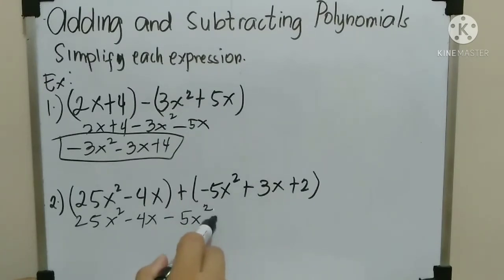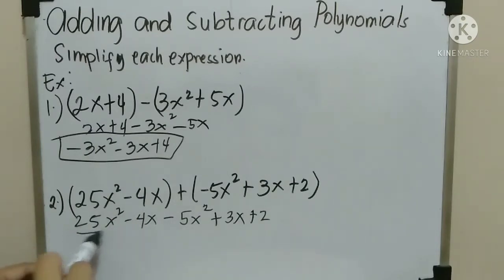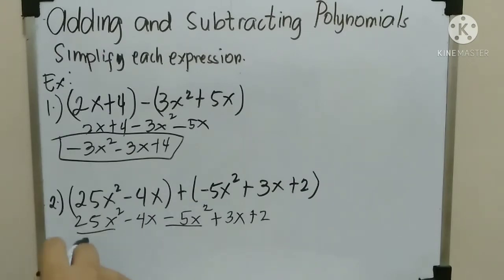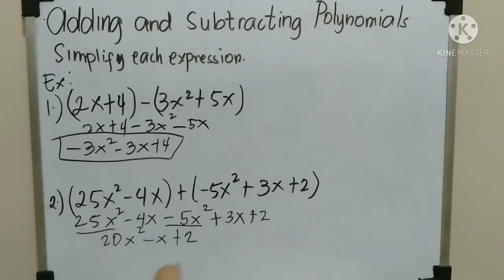Positive times positive 3x — that is positive 3x. Positive times positive 2 — the answer is positive 2. So, combine like terms: 25x² minus 5x² — the answer is 20x squared. Then, negative 4x plus 3x — the answer is negative x. Copy positive 2. Therefore, the answer is 20x² minus x plus 2.